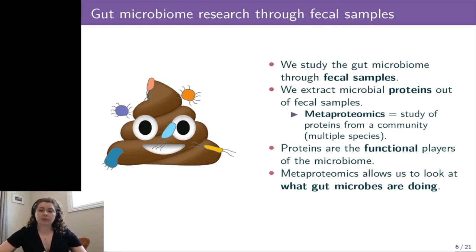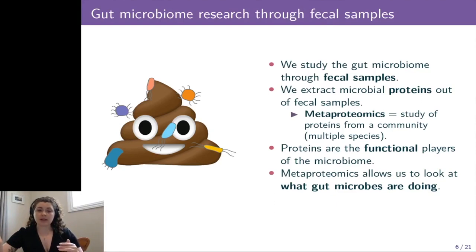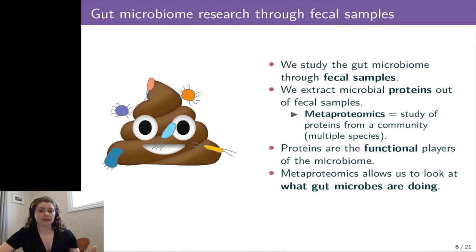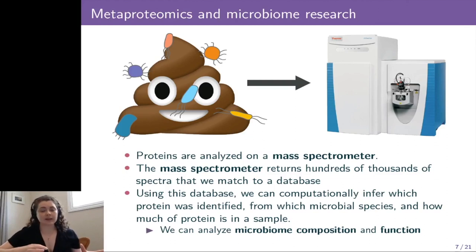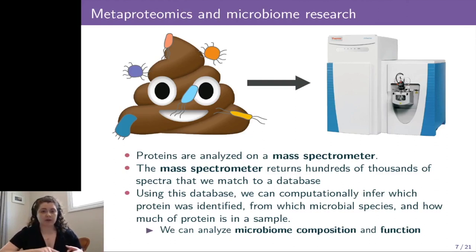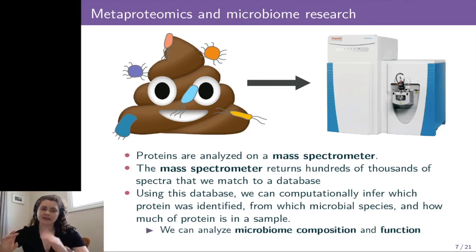We study the gut microbiome through fecal samples. We specifically extract microbial proteins out of these fecal samples and study microbiomes using metaproteomics, which is the study of proteins from a community, or the study of proteins from multiple species altogether all at once. We study proteins because they're the functional players of the microbiome, so metaproteomics allows us to look at what the gut microbes are actually doing. We analyze proteins on an instrument called a mass spectrometer, and this returns hundreds of thousands of spectra that we match back to a database, allowing us to computationally infer which protein was identified, from which microbial species, and how much of the protein was in the sample. This means that we can analyze both the composition of what the microbiome is and its function at the same time.